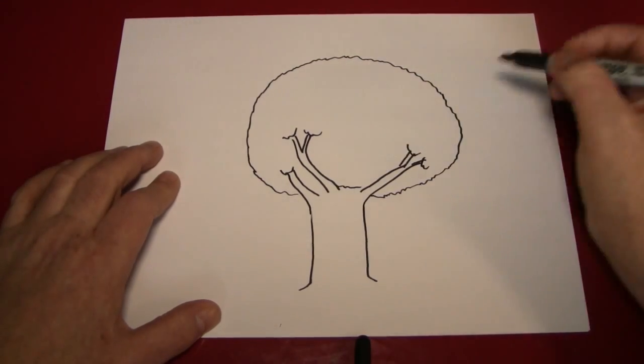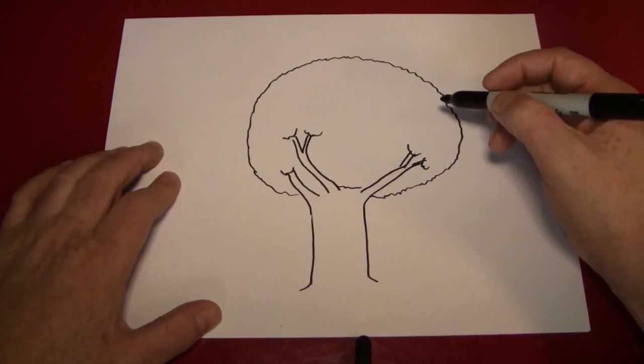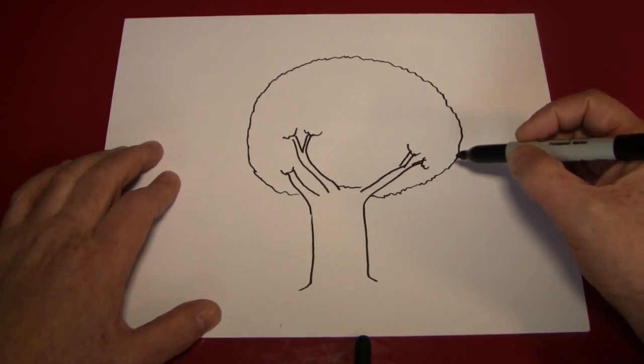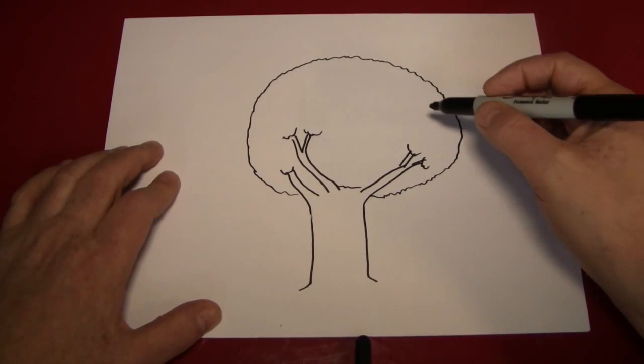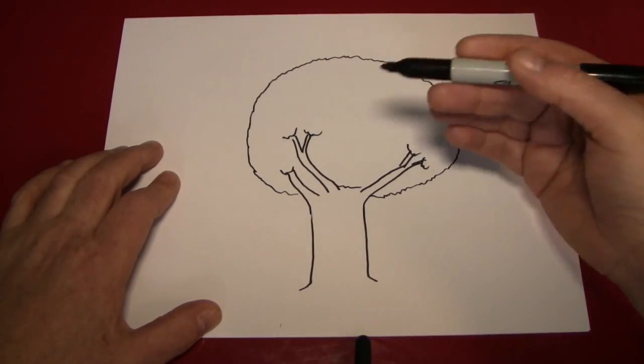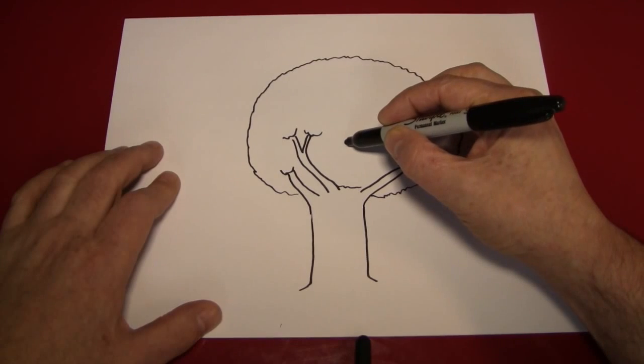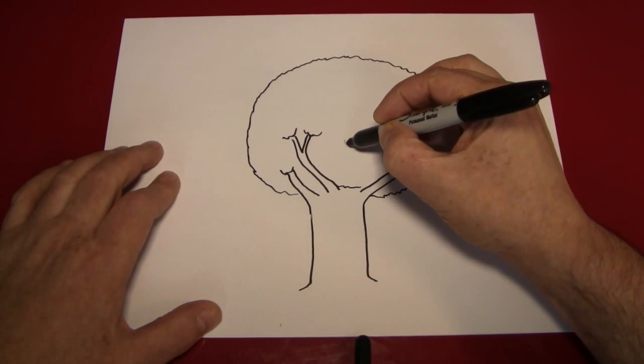I'm just going to make a jagged line between there to show leaves. You can represent these leaves by either making tiny little leaf shapes all over the place and filling it up, or you can just represent them by making little curved lines like that.